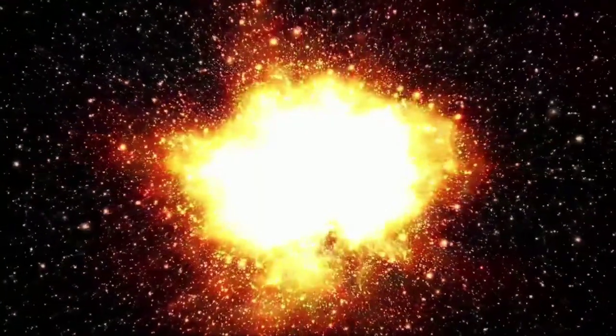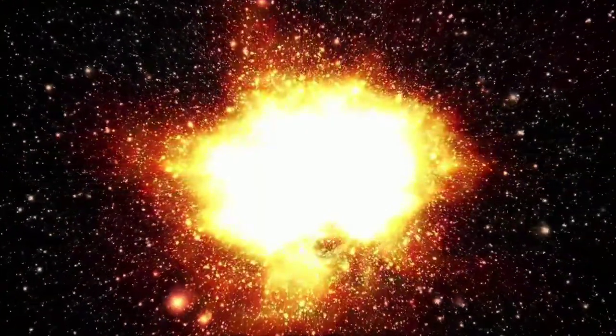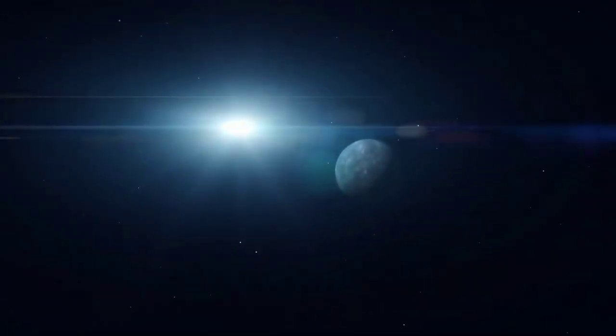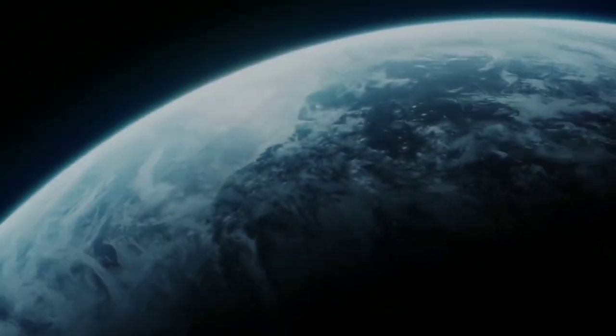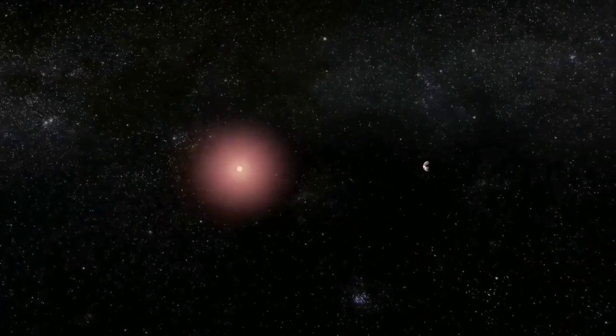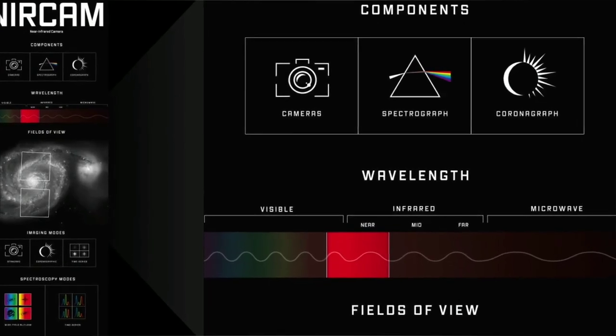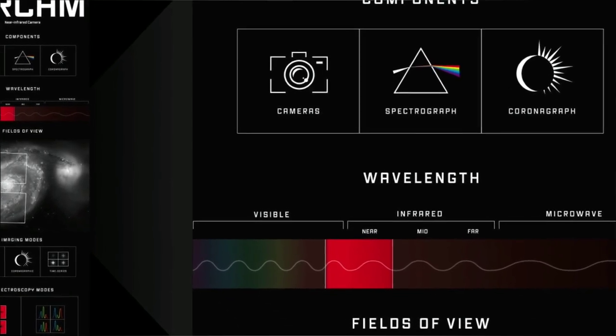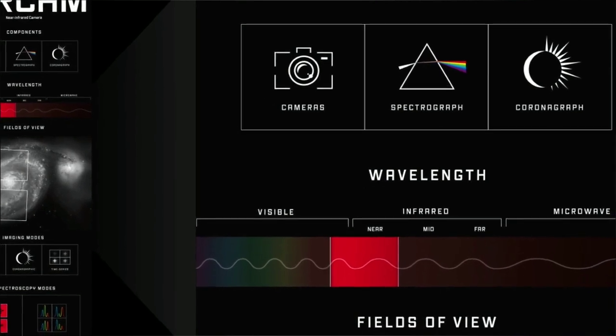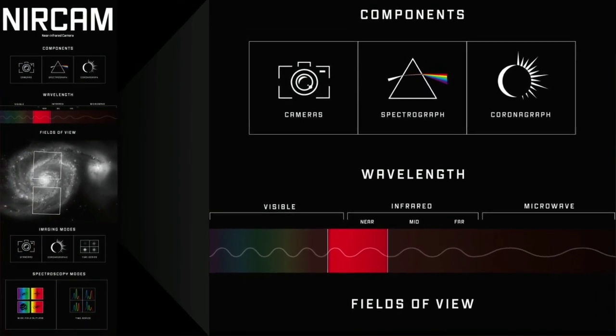In case you're wondering what this NIR cam is, don't worry at all, I've got you covered. Let me help you understand this before moving on. I wouldn't want to confuse you after getting this far into the video after all. To put it simply, the near-infrared camera is a wavefront or a primary sensor and imager which will cover the infrared wavelength of 0.6 to 5 microns.